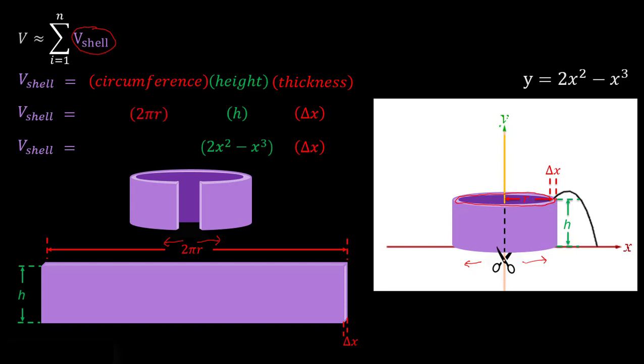And specifically, remember we're integrating with respect to x. x is increasing as we integrate. And that radius here is just going to be our x value. So we can go ahead and plug in our x for this radius up here. So it's just 2 pi x.